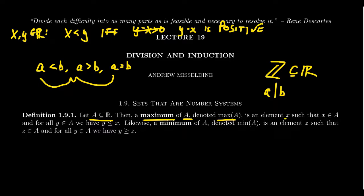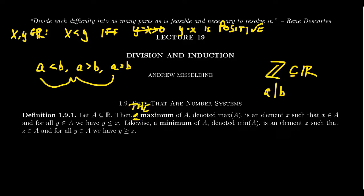A maximum is an element X such that X belongs to the set, and if we take any other element Y of the set, it turns out that Y is less than or equal to X. So you take something in the set, and then everyone else in the set is less than or equal to it. We could talk about the maximum, and we can prove that if there are two maxima of a set, they're actually equal to each other. I'll leave that as an exercise, as we'll do more conversations about uniqueness proofs in the future.